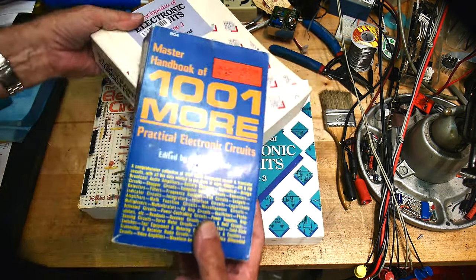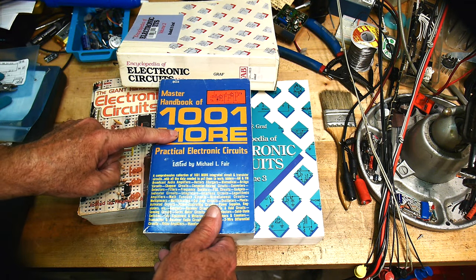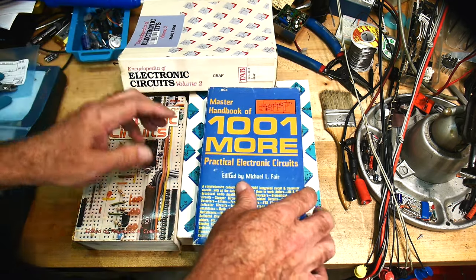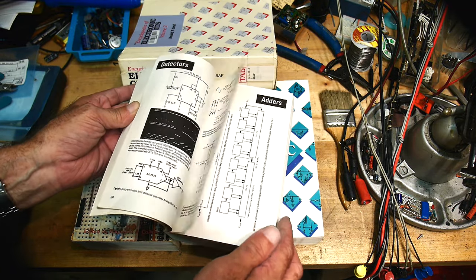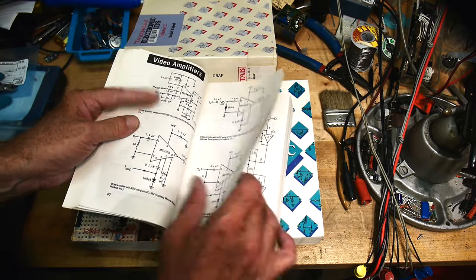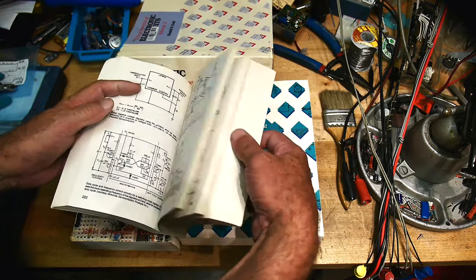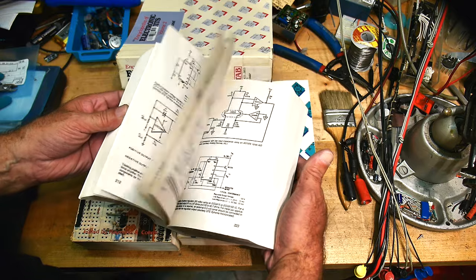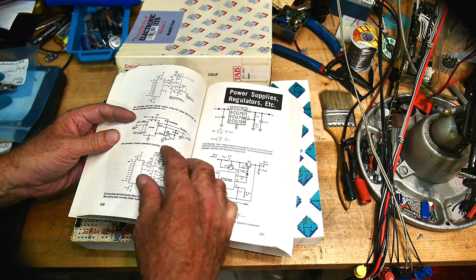So this is what is what exactly it says it is. The master handbook of a thousand and one more practical electronic circuits, because there are other of these different volumes. And what is it? Every single page is one or more schematics. And that's all this book is. It's schematic after schematic, after circuit, after circuit, after circuit, after schematic, after circuit, a thousand and one, literally a thousand and one circuits. So if you can't find an idea in here, you're doing something wrong.